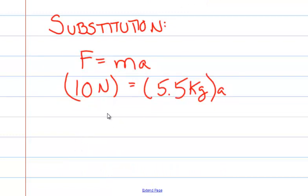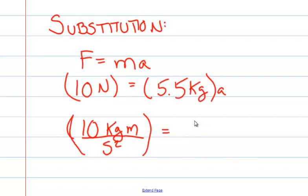The key to this problem is remembering that a Newton is also equal to kilogram meters per second squared. So we have 10 kilogram meters per second squared equals 5.5 kilograms times A.